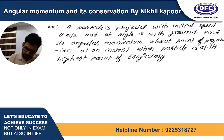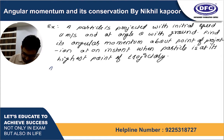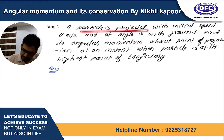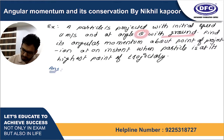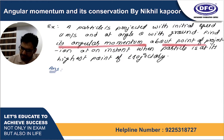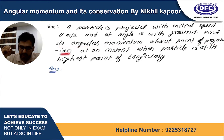Let's start with this example. A particle is projected with initial speed u meters per second at an angle theta with the ground. Find its angular momentum about the point of projection at the instant when the particle is at the highest point of its trajectory.